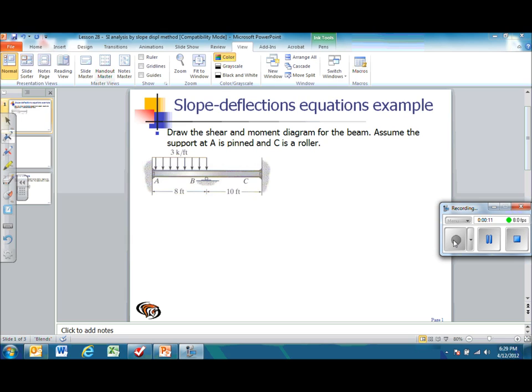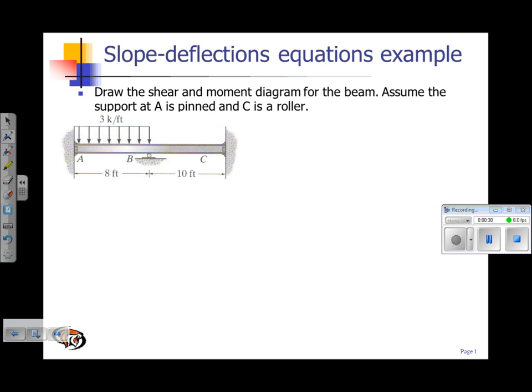The first thing we want to do is identify the degrees of freedom. In this case, we have three degrees of freedom: a slope at A, a slope at B, and also a slope at C. So the deflected shape of our beam would look something like this.